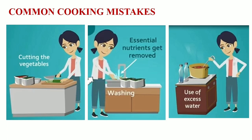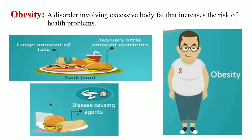Common cooking mistakes: We should also make sure that the food is cooked correctly. For example, cutting the vegetables or fruits and then washing them may lead to removal of essential nutrients. Repeated washing of rice or pulses can also cause removal of some nutrients. If excess water is used during cooking, then also some nutrients get removed from food.